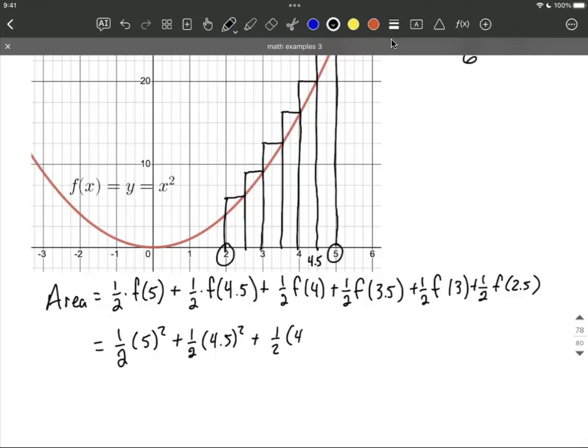One half times four squared. One half times three and a half squared. One half times three squared. One half times two and a half squared.